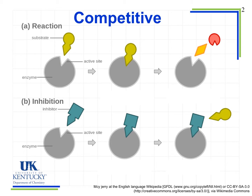When we look at an inhibited reaction — one that's been slowed down or stopped — we see that some molecule called an inhibitor has a shape similar to the substrate. Notice they both have the same shape at the bottom, but something about the rest of the molecule is different. This inhibitor comes into the active site and sits in here, blocking our substrate from coming in. So the normal reaction simply doesn't happen because some other molecule is blocking it.